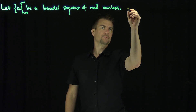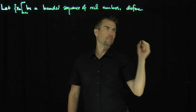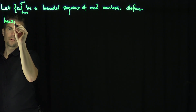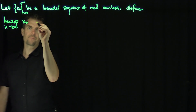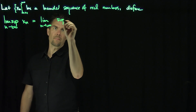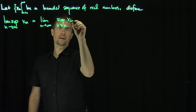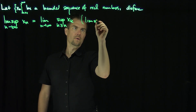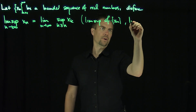We define two things. The lim-sup as n tends to infinity of the sequence xn is defined as the limit as n goes to infinity of the supremum over k greater than or equal to n of xk. This is called the lim-sup of xn, or the limit superior.